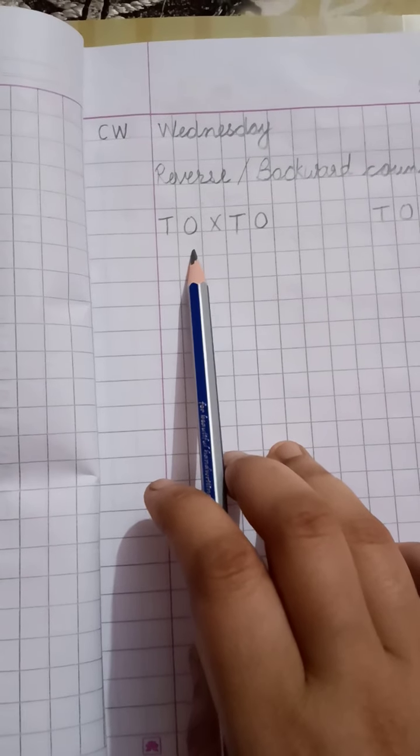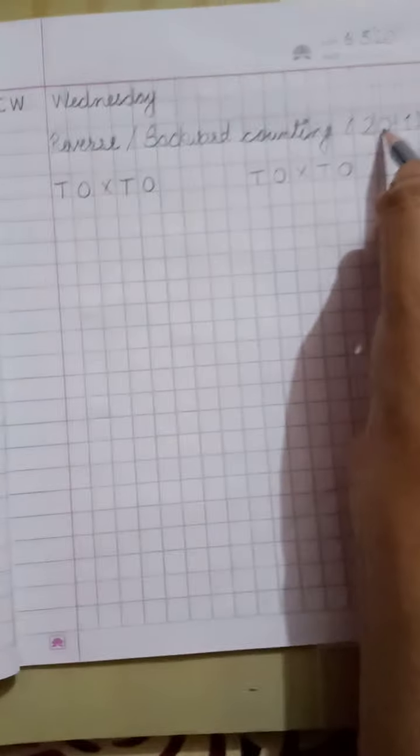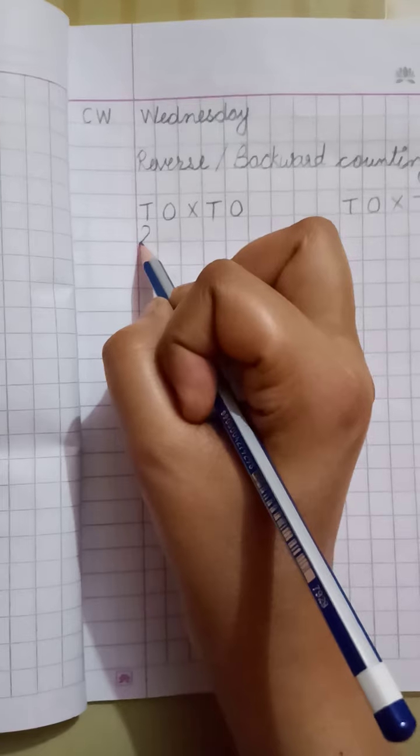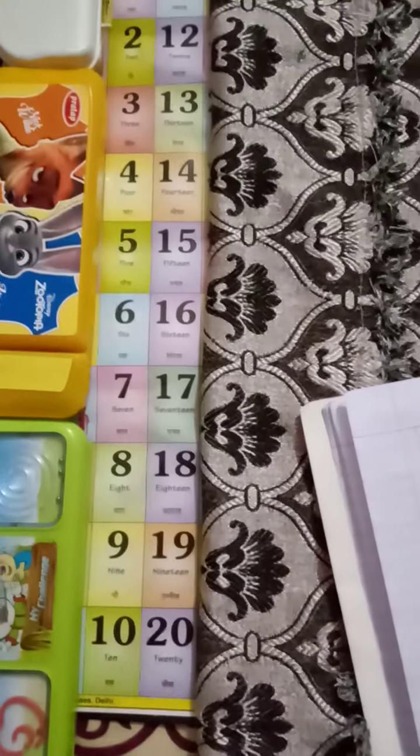So we write here T-O. Okay? So let's start. कहां से start करने हैं हमें? 20 से. We will write here number 20. Okay? Then look here.